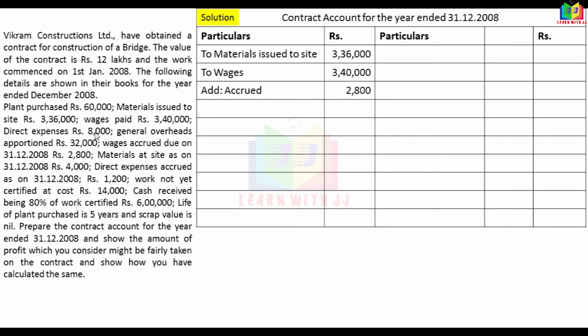Direct expenses is Rs. 8,000. In the direct expenses, we can add accrued Rs. 1,200. So the total direct expenses including accrued amount is Rs. 9,200.